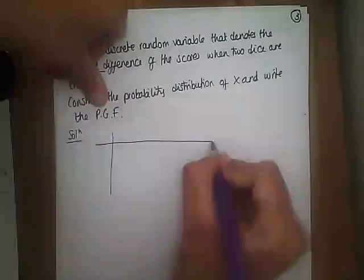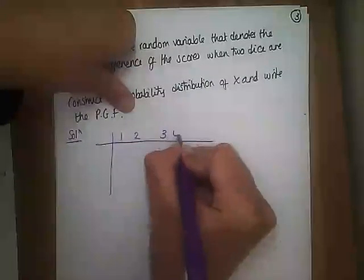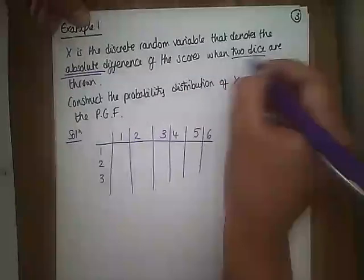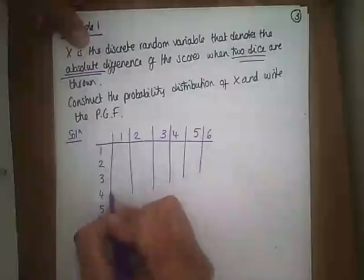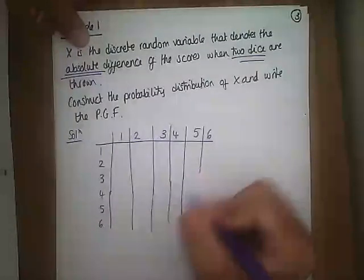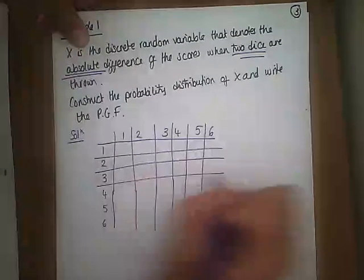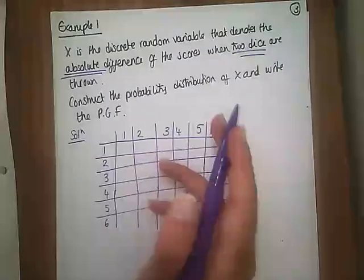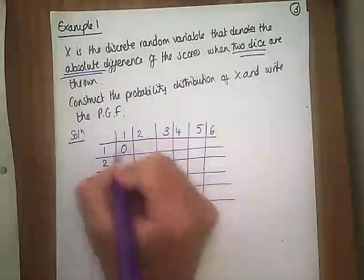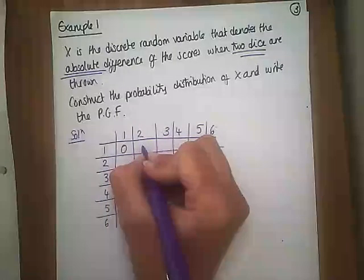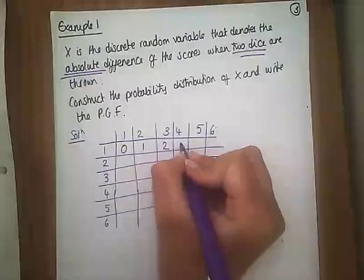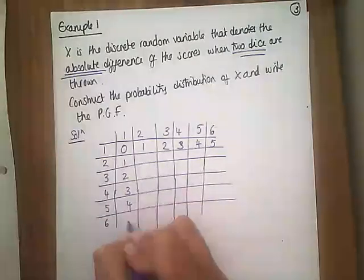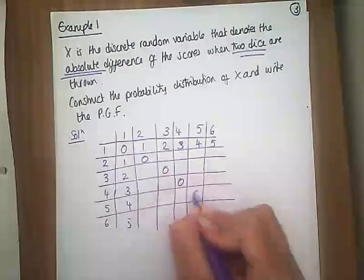A sample space diagram shows all possible outcomes. With two fair dice each showing 1 through 6, we work out the absolute differences. The diagonal entries are all zero because the scores are equal. Along the edges the differences increase: 1, 2, 3, 4, 5. Those are our possible absolute difference values.